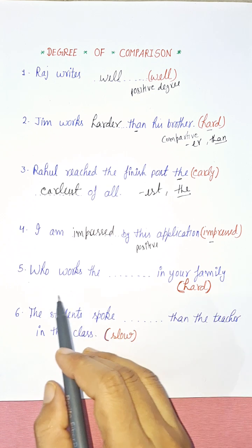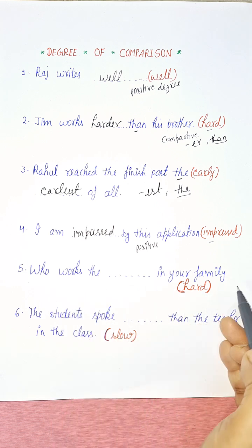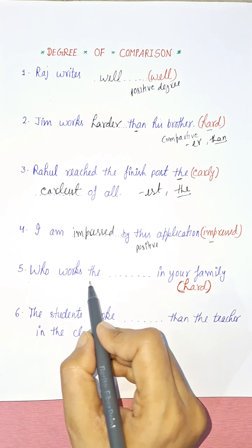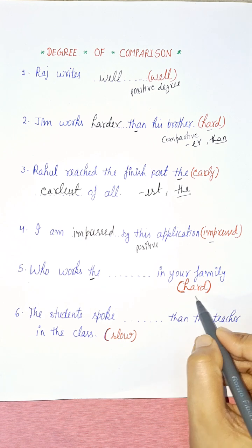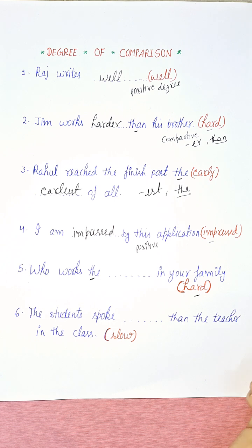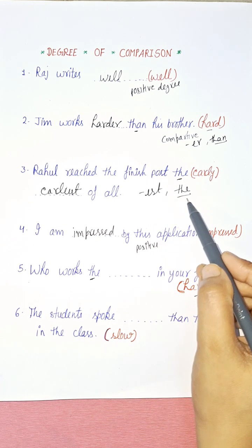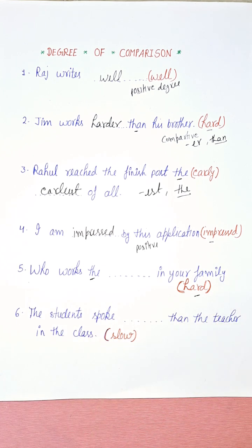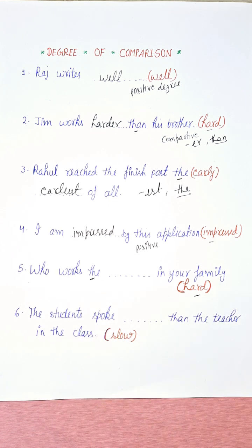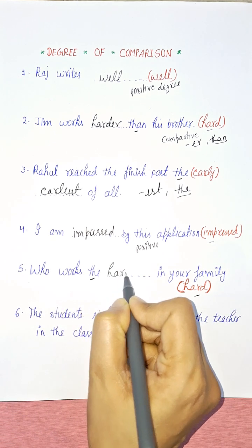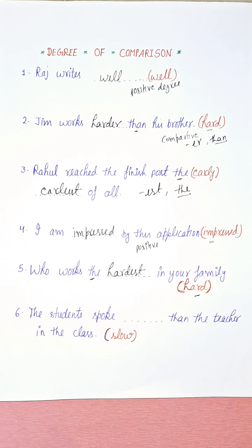Fifth sentence: 'Who works the ___ in your family?' The keyword 'the' tells you it is superlative degree. In superlative degree, you get the EST form. The adjective is 'hard,' so the answer is 'Who works the hardest in your family?'